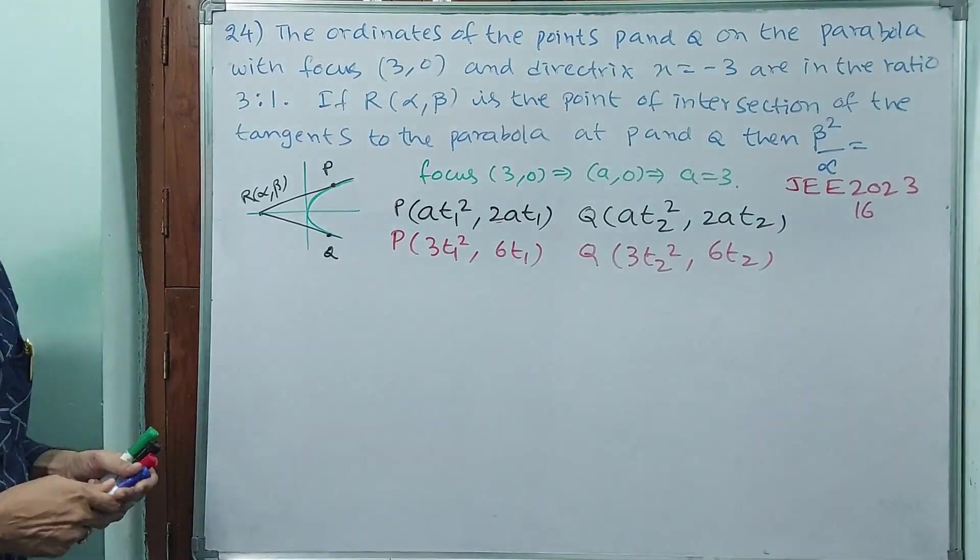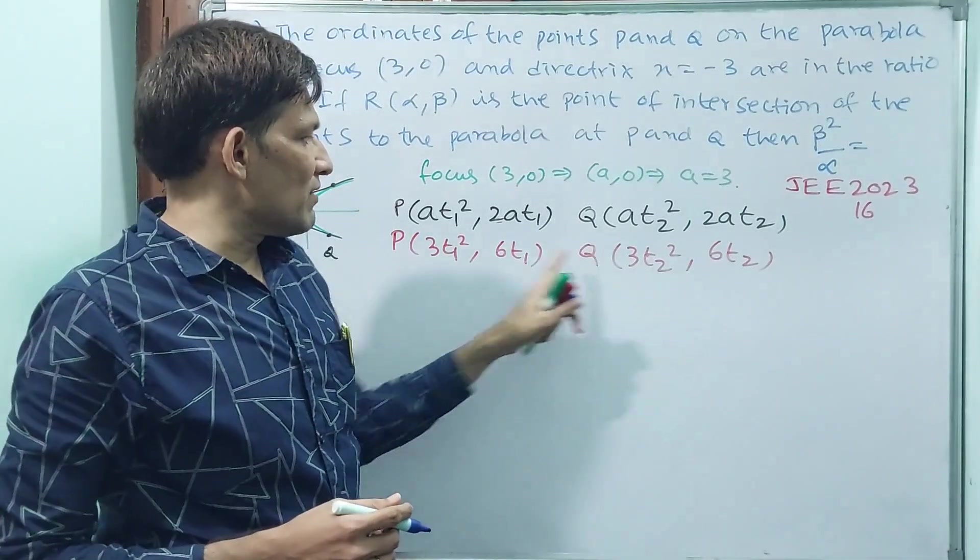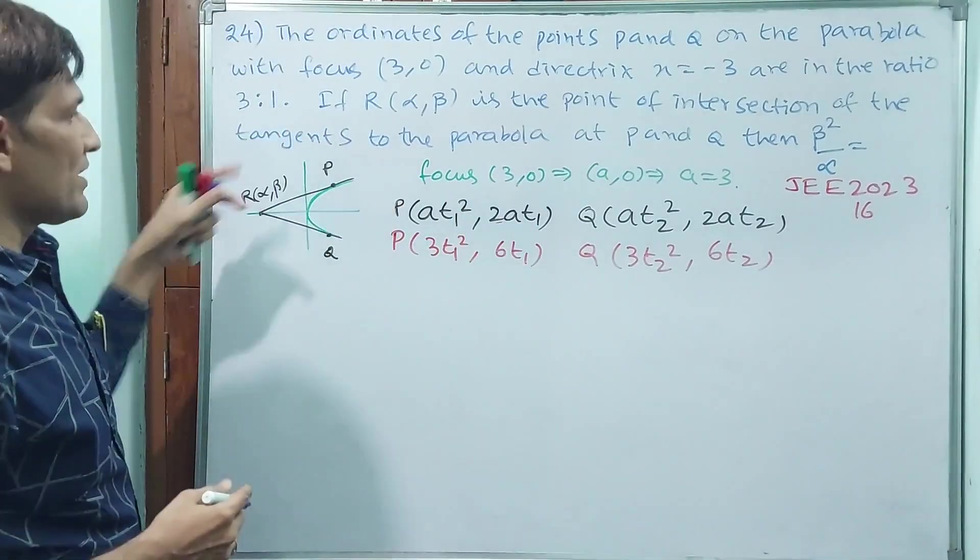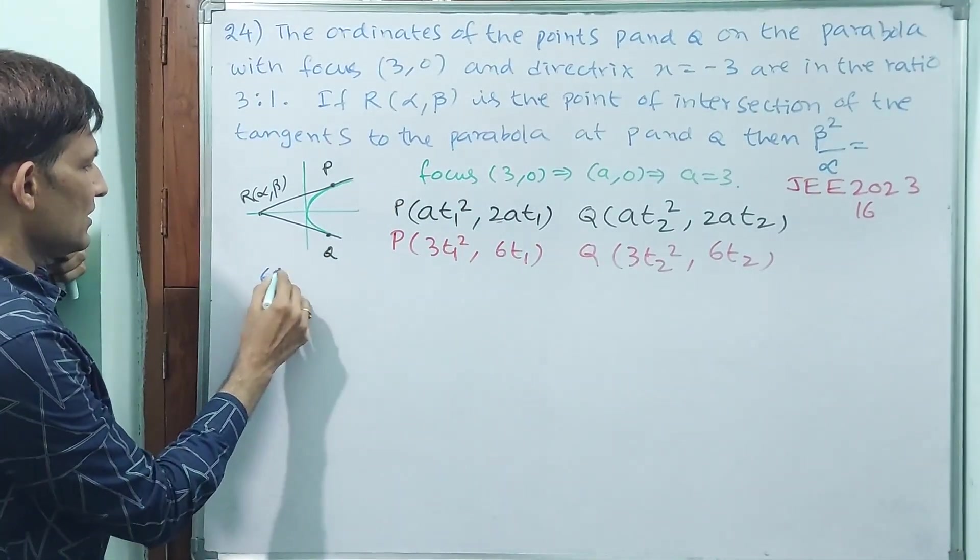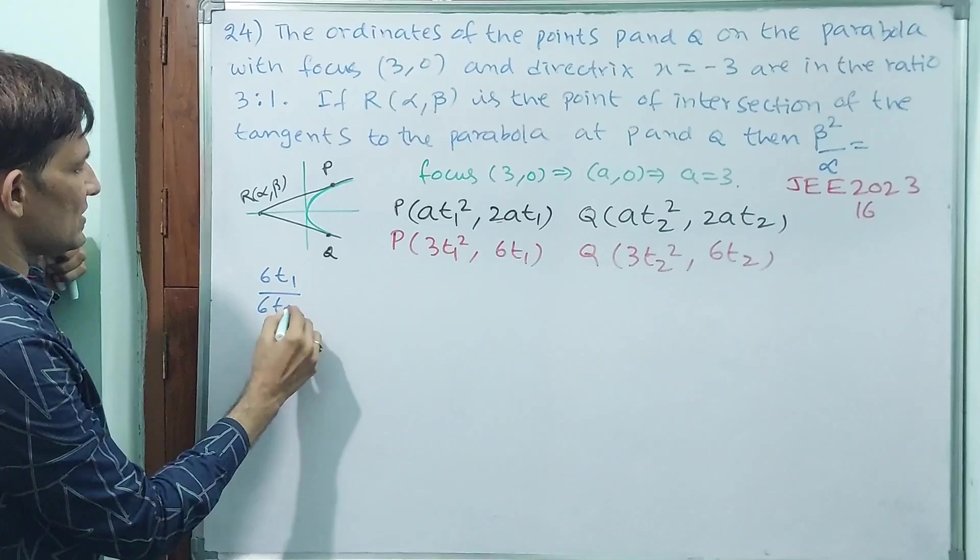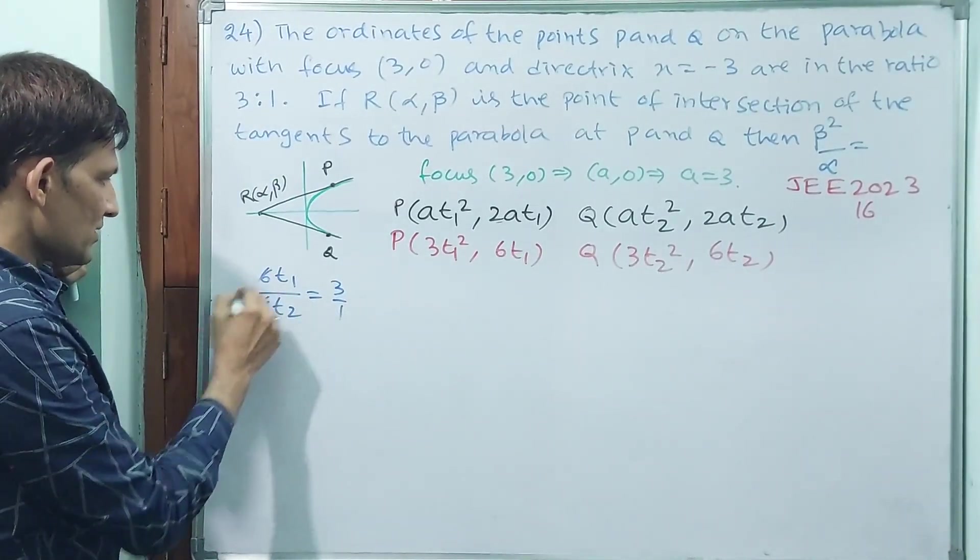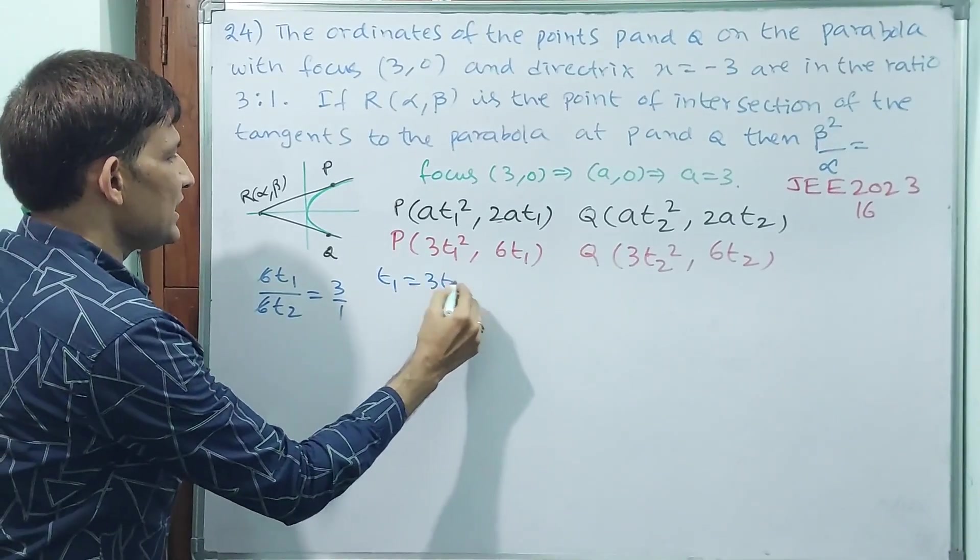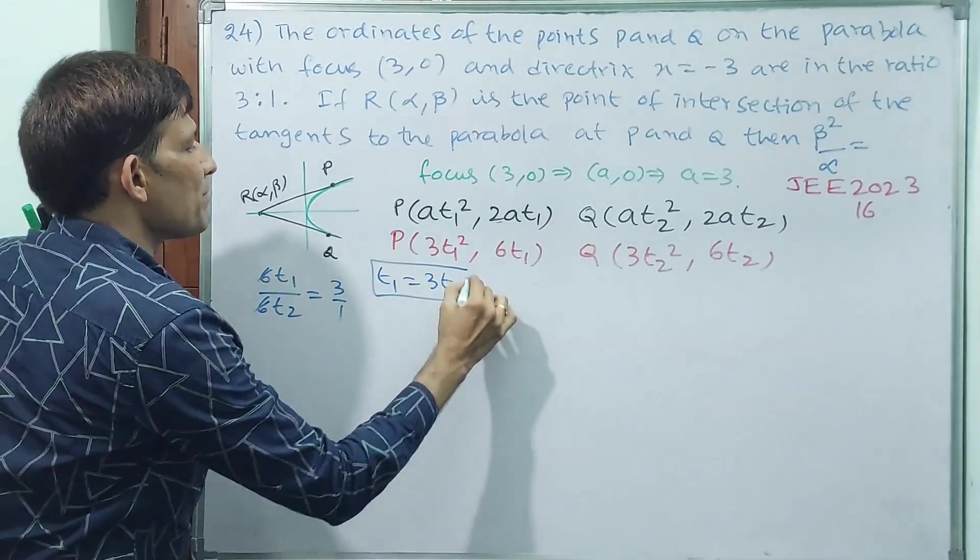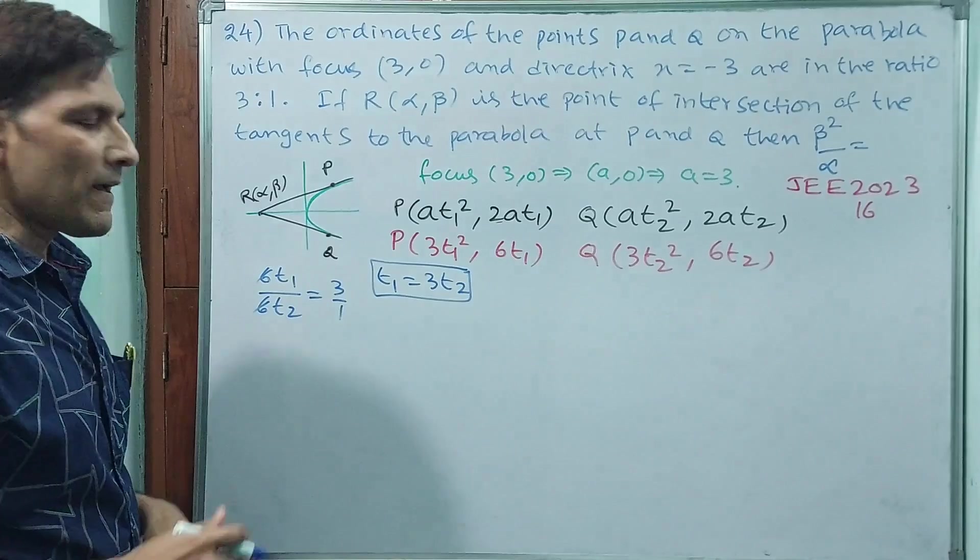Another thing, what they have done: ordinate splits 6t₁ by 6t₂, ratio 3 by 1. That means 6t₁/6t₂ = 3/1. 6 cancels out, t₁ = 3t₂. This ratio, you take and keep aside.